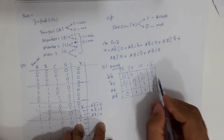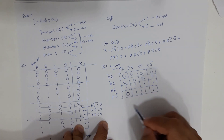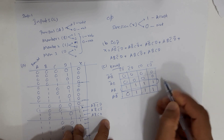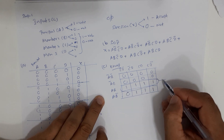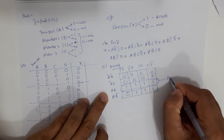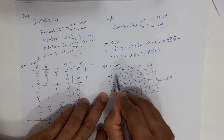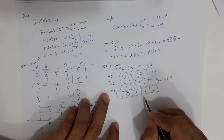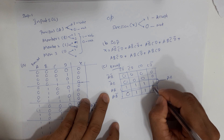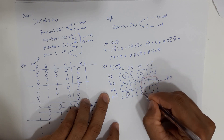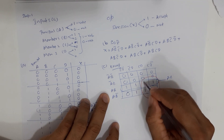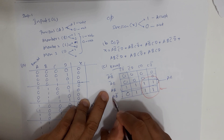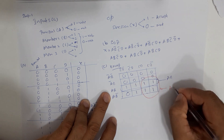We first check for a group of eight — there isn't one. But we have a group of four: a complete row where AB is common across all columns, giving the term AB. Then we group another four ones spanning two rows, where A and C are the common variables, giving the term AC.